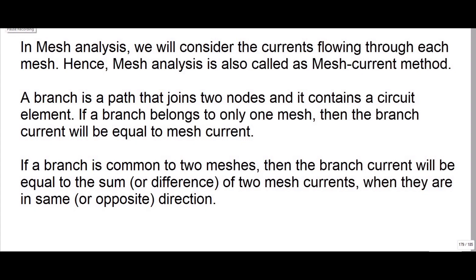Here you have a term called branch. A branch is a path that joins two nodes and it contains a circuit element. If a branch belongs to one mesh, then the branch current will be equal to mesh current.